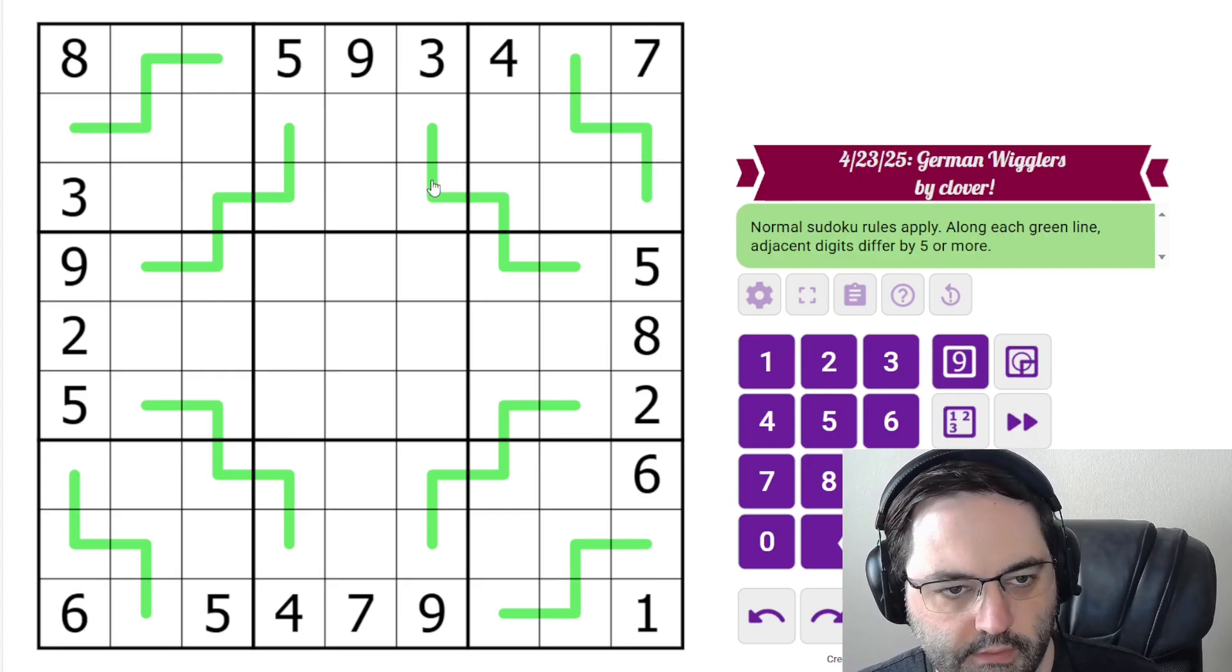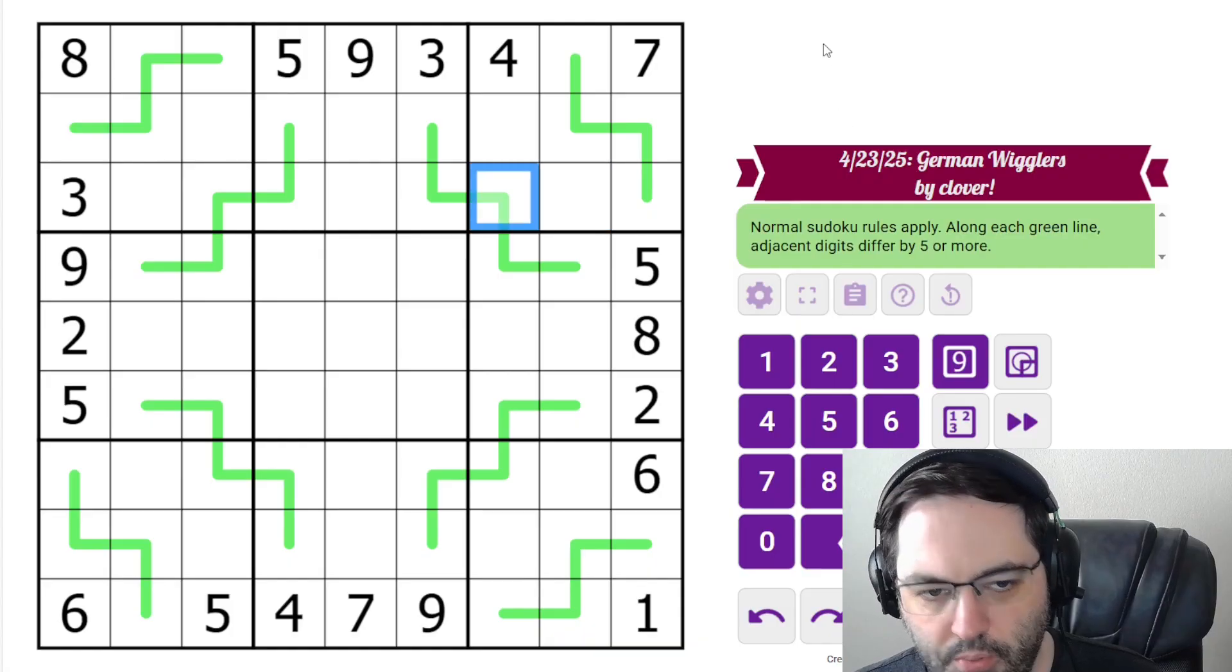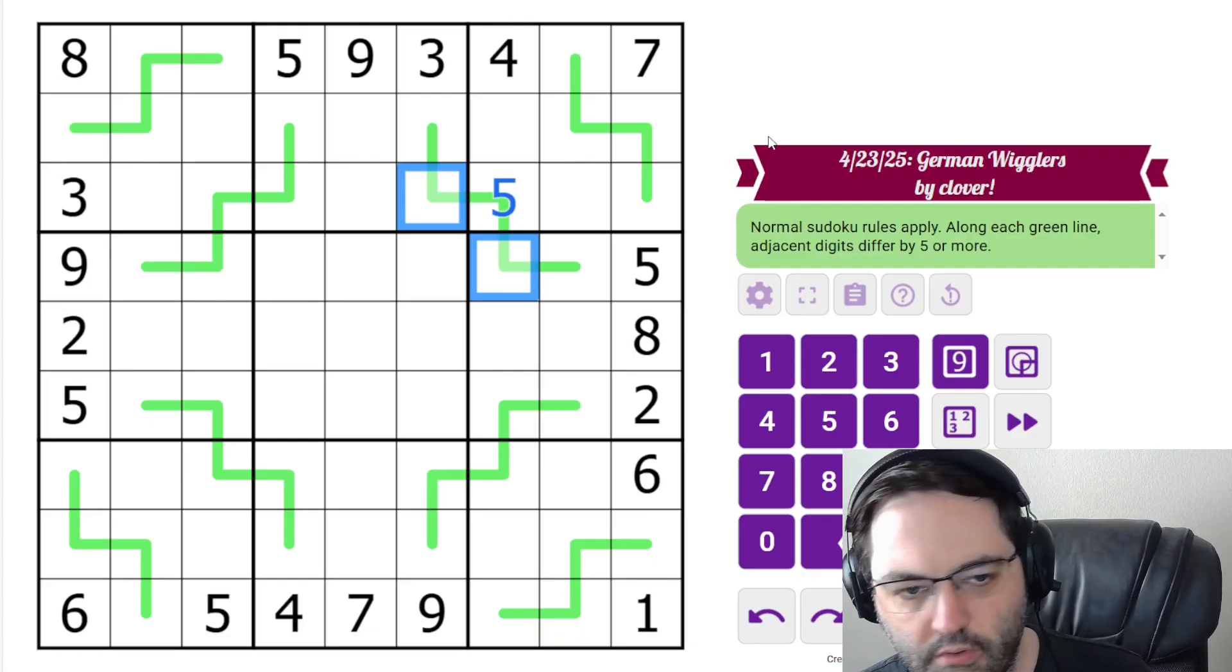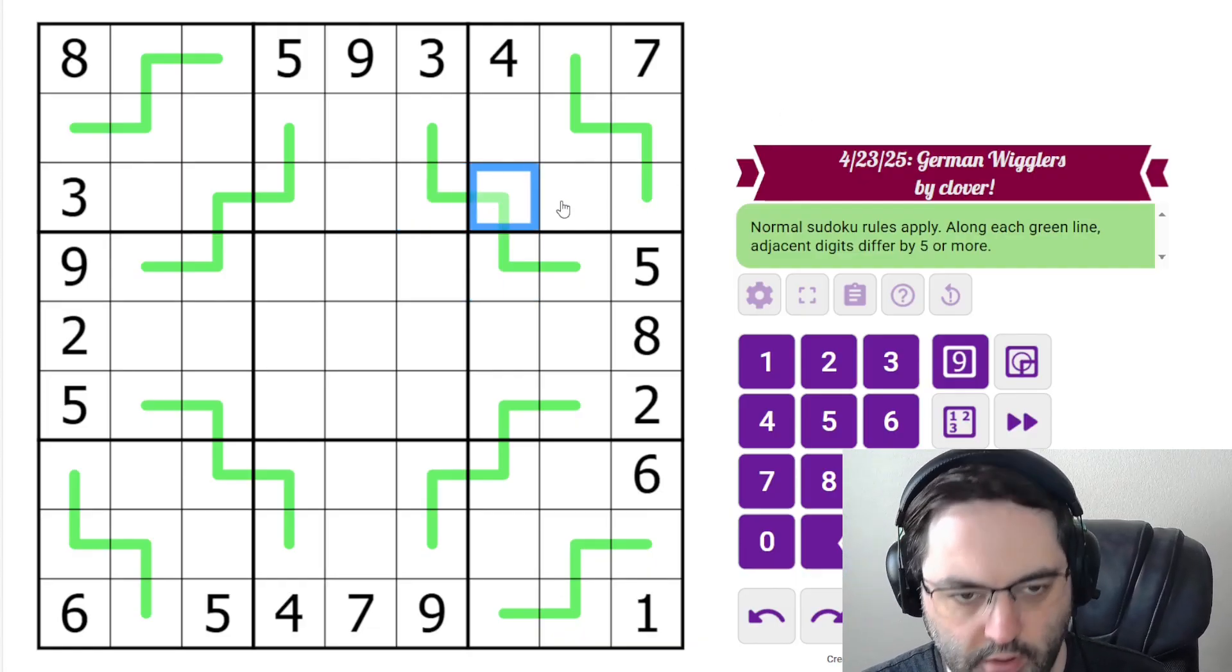That has some consequences, so let's remind ourselves what those consequences are. We can never put 5 on a line, because if we want to differ by at least 5, we would either have to go down to 0 or up to 10, and those are not allowed.